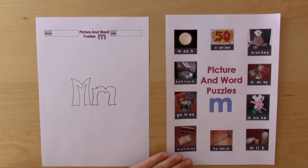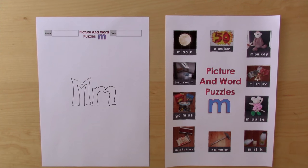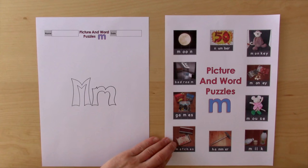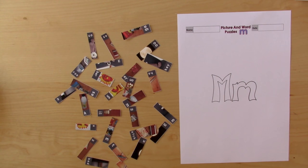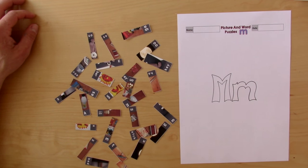Okay, so here's our picture and word puzzles download for the letter M. And Elliot and I have already cut out the puzzle pieces. So we're going to put that one aside. There are three pieces for each of them.